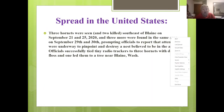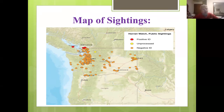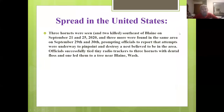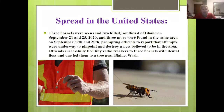Red dots on the map were where they had positive IDs on Asian giant hornets; yellow dots were where something was turned in but not yet confirmed; orange dots were things turned in that were not Asian giant hornets. Three hornets were then seen in two kills southeast of Blaine on September 21st and 25th in 2020, and three more were found September 29th and 30th. Officials successfully tied tiny radio trackers to three hornets with dental floss, and one led them to a tree near Blaine, Washington.